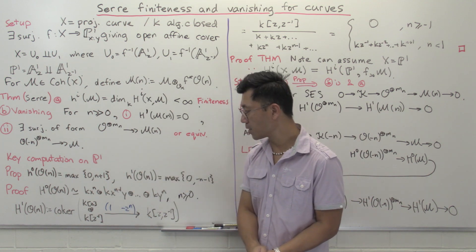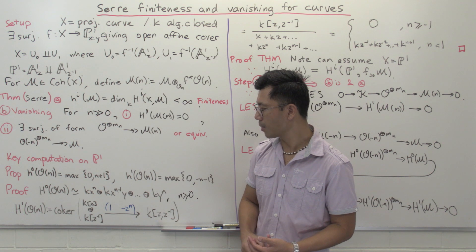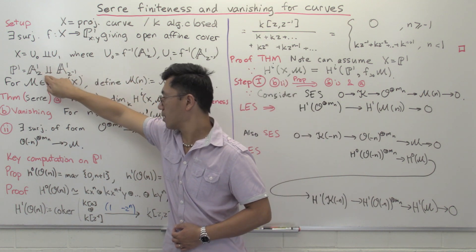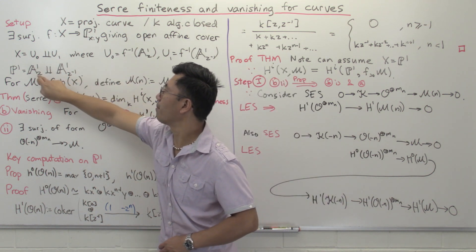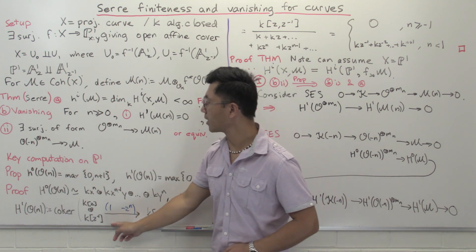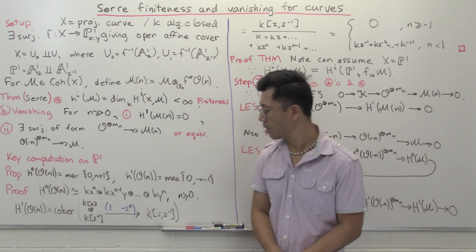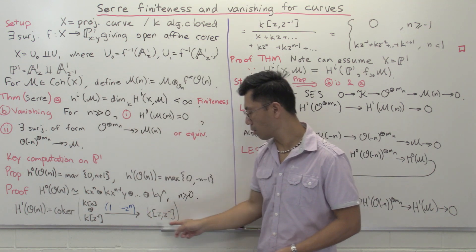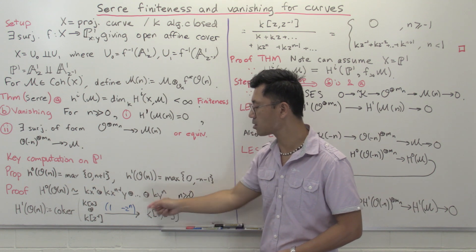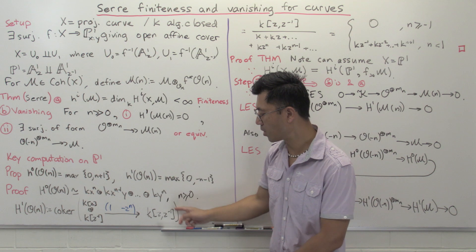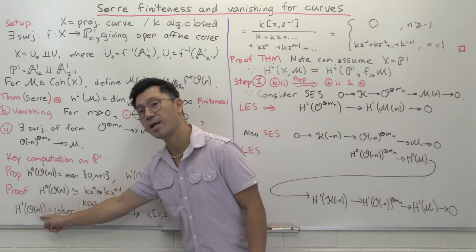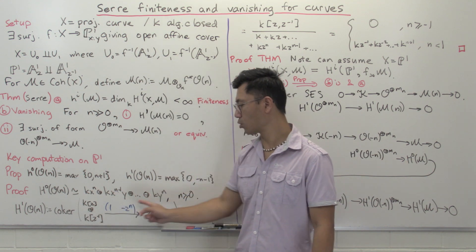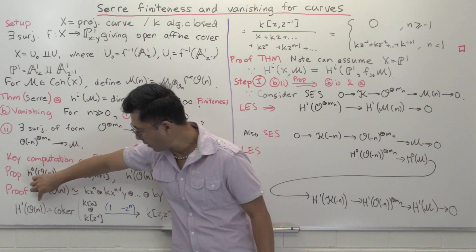H1 is the more interesting one. We look at O(n) on the two affine patches. On U0, which is above A1_z, the ring is k[z]. On U1, which is above A1_{z^{-1}}, it's k[z^{-1}]. Both restrict to k[z, z^{-1}] on the intersection. The sheaf O(n) is free on both patches. The n tells you how you glue: when mapping k[z^{-1}] you should multiply by z^{-n}. That's where the dependence on n comes in.